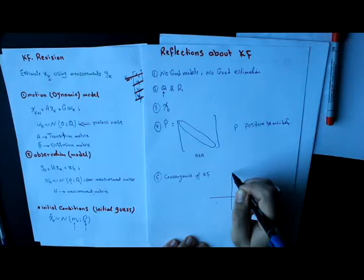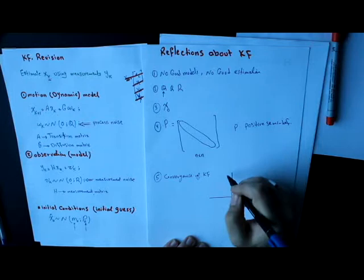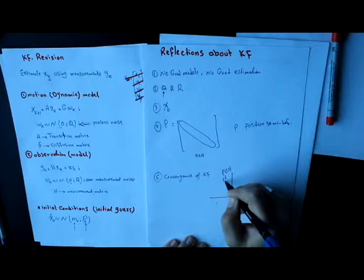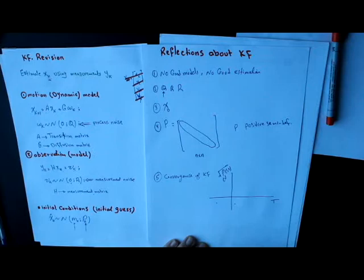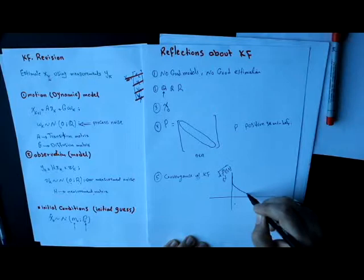So if I have here time steps, and here is the value of the first element, for example, of the covariance matrix, sigma squared or even sigma, I will find that it will have this kind of curve over time.